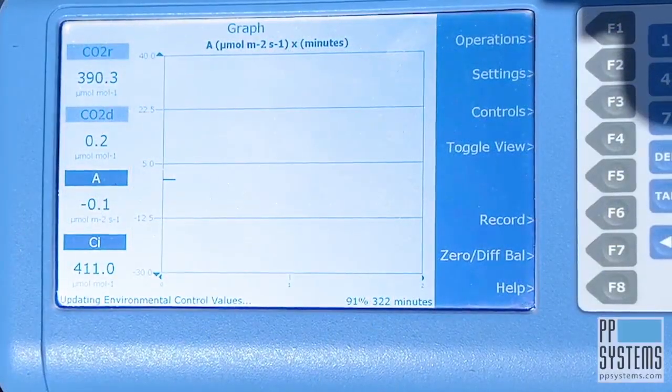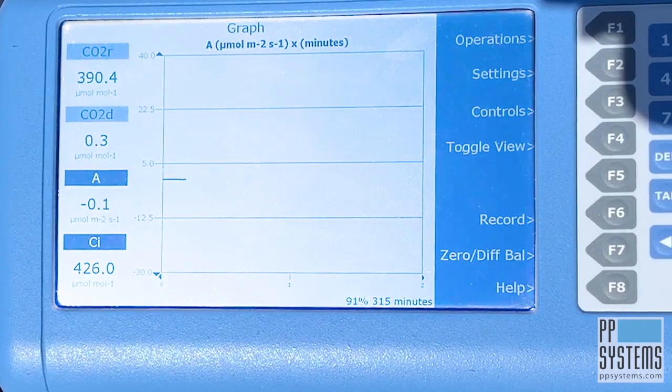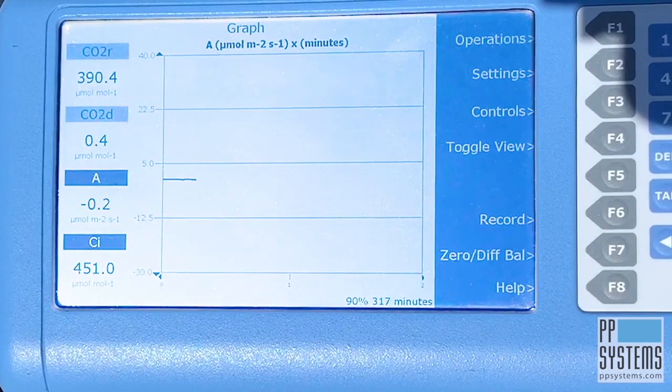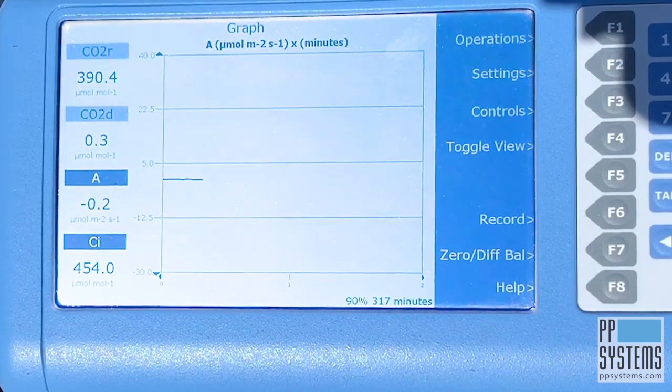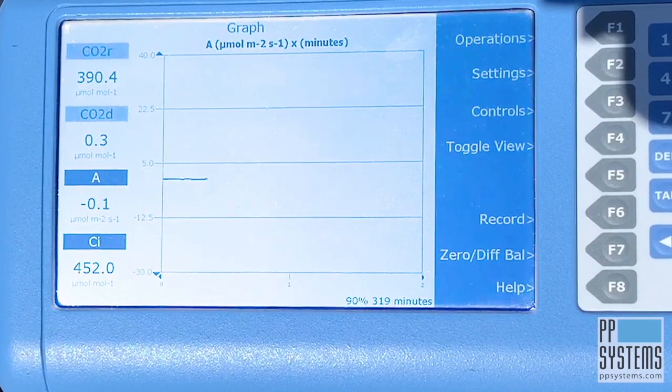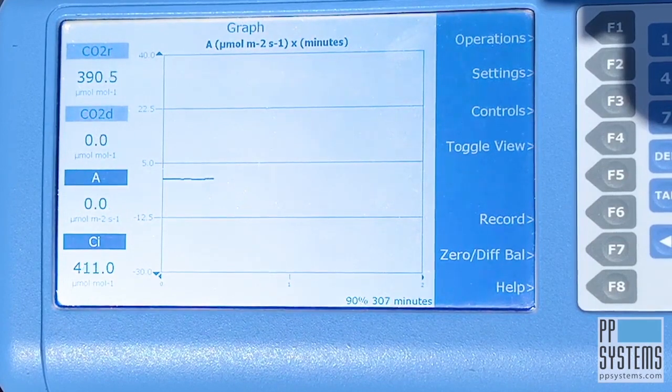Not only is the Cyrus 3 lightweight and compact, its small system volume is optimized for the fastest, most accurate measurement of photosynthesis available, allowing you to perform measurements in just seconds. Faster measurements allow the user to expand the parameters of their research and use their time and resources efficiently.